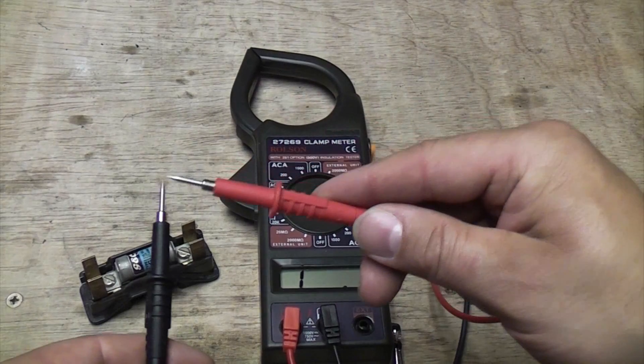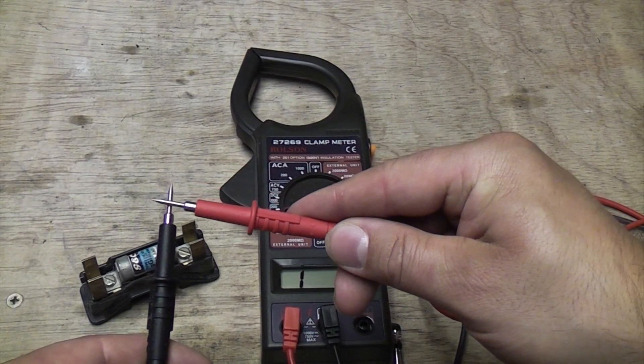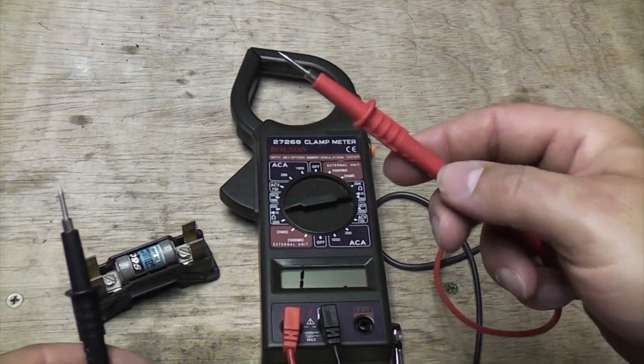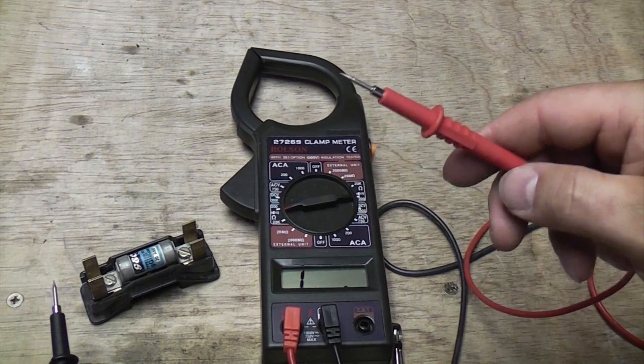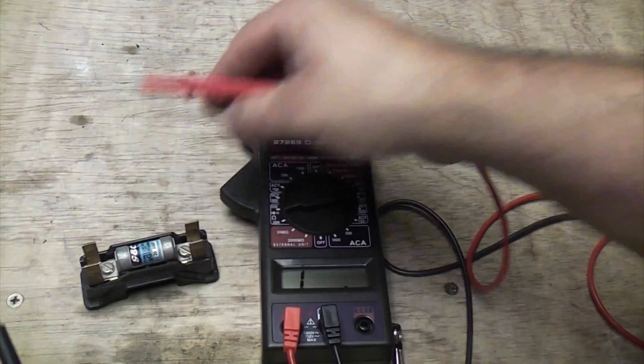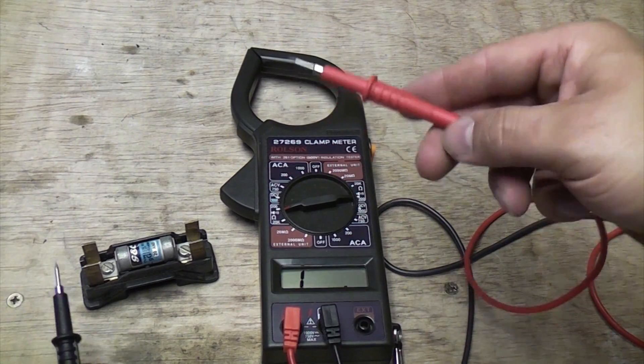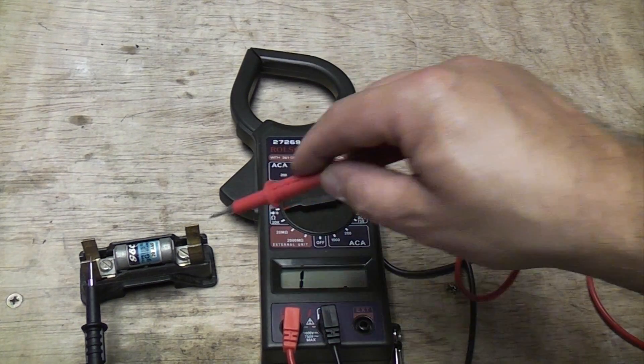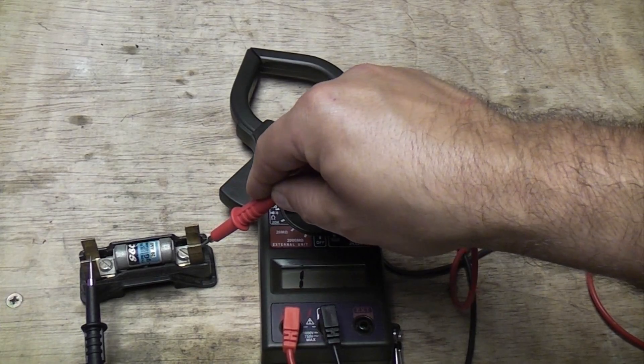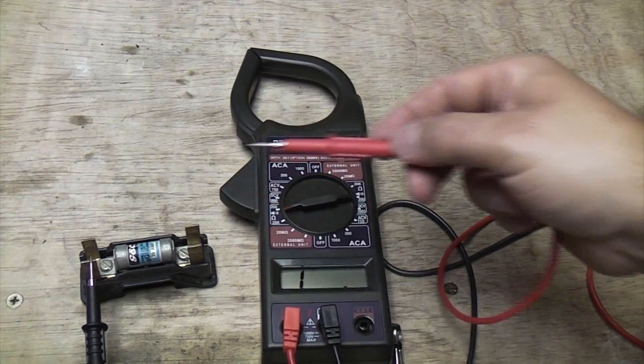So what happens now is when you touch the probes together you get a beep, and that is really useful for electrical testing. So we've got a fuse here and we don't know if it's working or not, so all we need to do is touch one probe on one side and the other probe on the other, and you now know that that fuse is working.